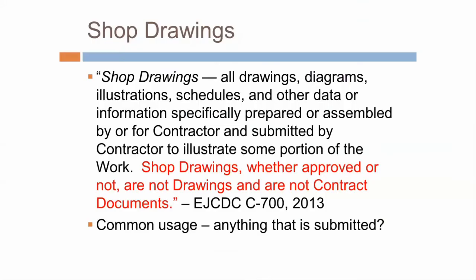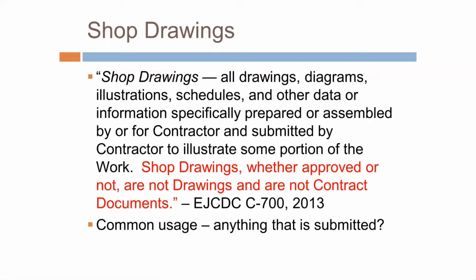First, let's talk about shop drawings in EJCDC. C700 is the name of the general conditions of the construction contract. The definition includes all drawings, diagrams, illustrations, schedules, and other data — the important parts being information specifically prepared or assembled by or for the contractor and submitted by the contractor to illustrate some portion of the work. The last sentence, though not technically part of the definition, is such an important concept that EJCDC decided to make it part of the definition.